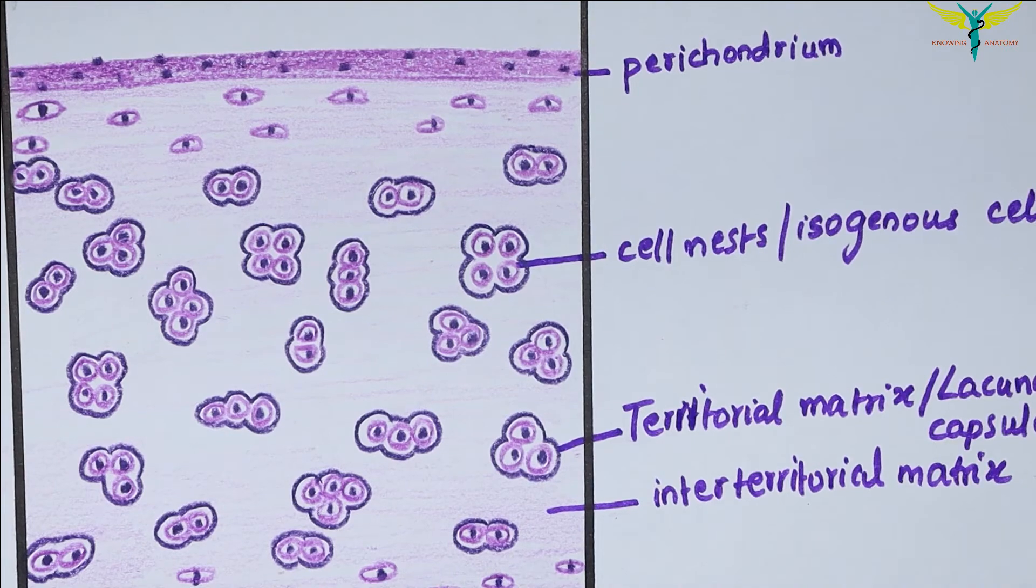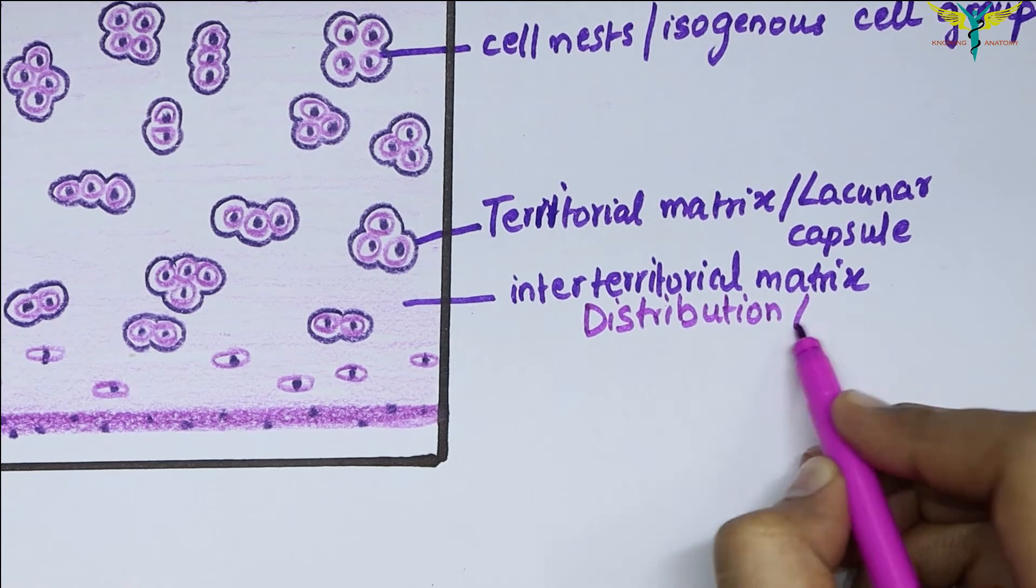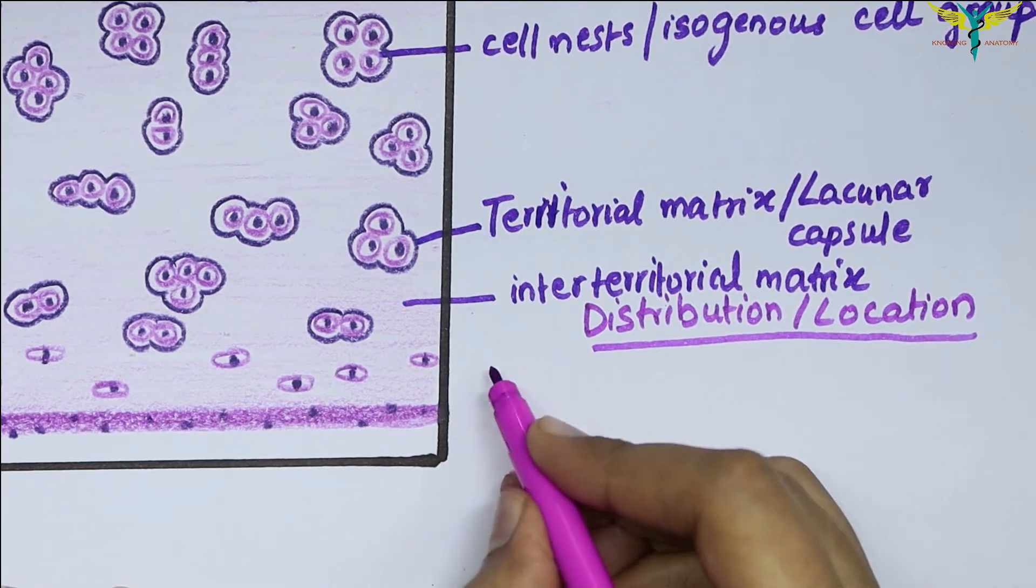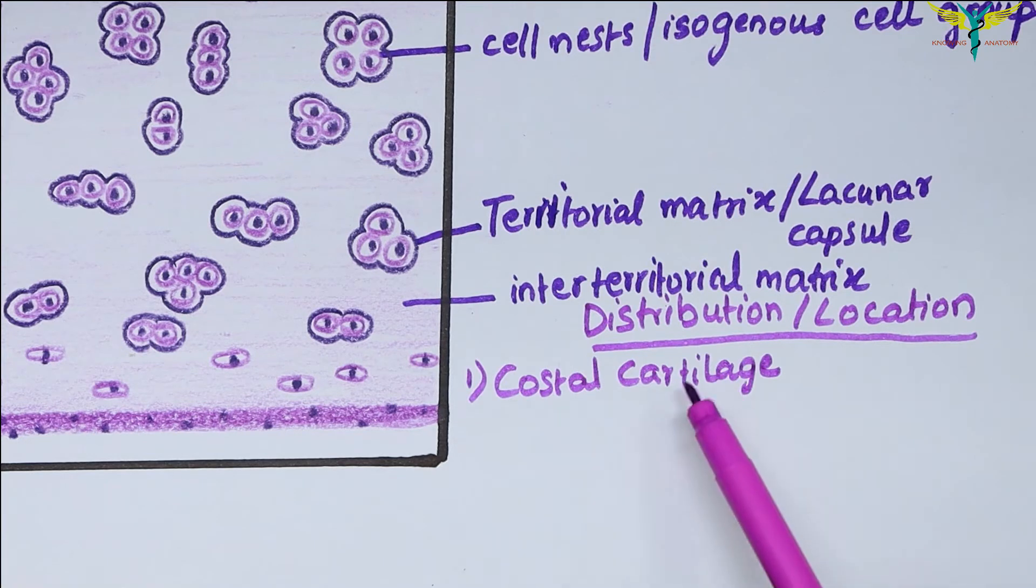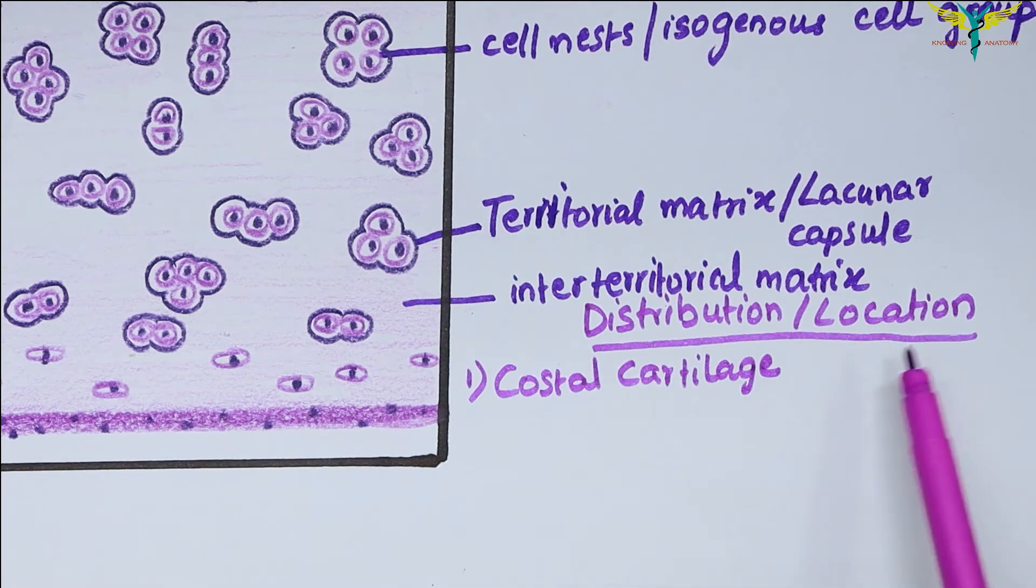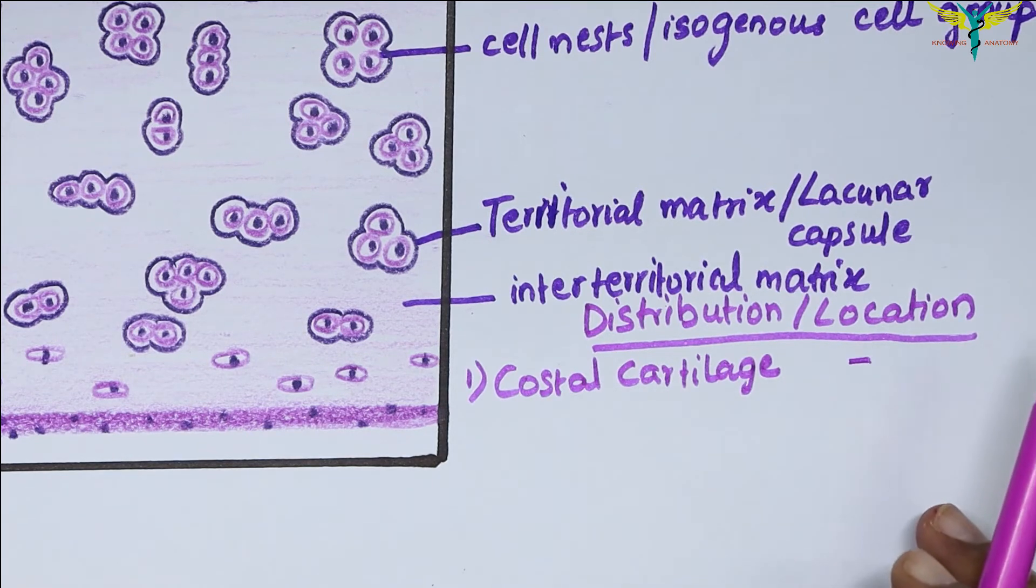Now coming to the distribution or the location of the hyaline cartilage: the hyaline cartilage is present in the coastal cartilage. That means these coastal cartilages are themselves the bars of the hyaline cartilage that connect the ventral ends of the ribs to the sternum. The cellularity of this coastal cartilage also decreases with age.